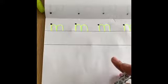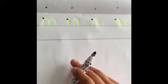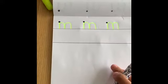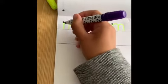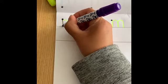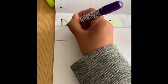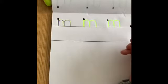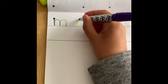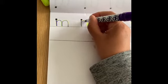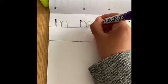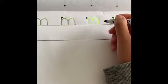Now get a darker pen and start writing the sound over the top and remember to use your rhyme. Maisie, mountain, mountain. Maisie, mountain, mountain. You keep going.